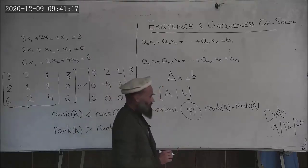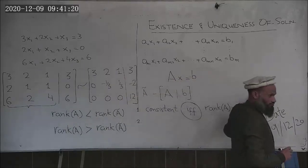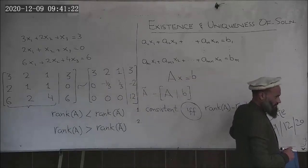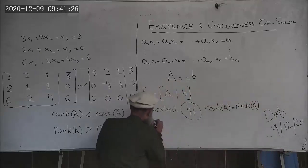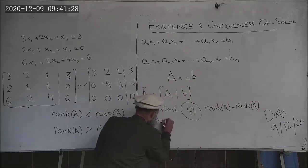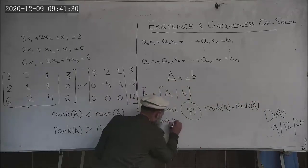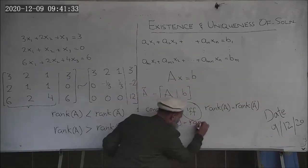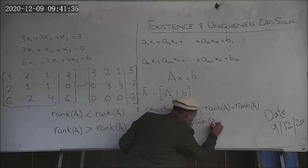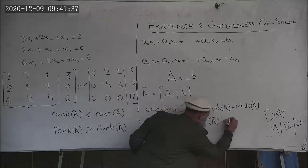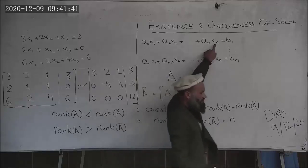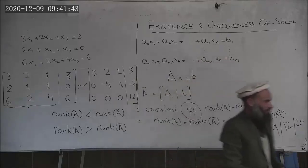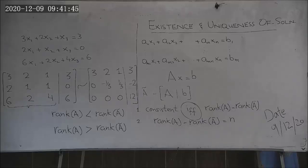The second question is uniqueness. If rank of A is equal to rank of A-tilde, then a solution exists. Furthermore, if rank of A — which equals rank of A-tilde — is equal to N, the number of unknown variables, then the solution is unique. You have exactly one unique solution.